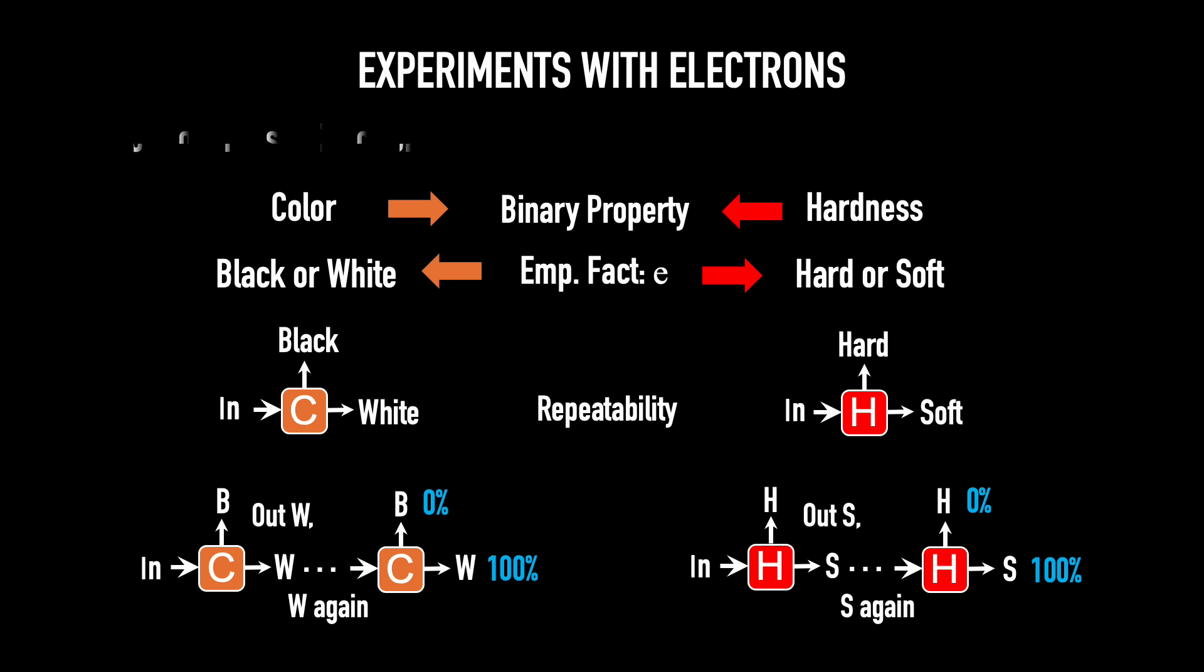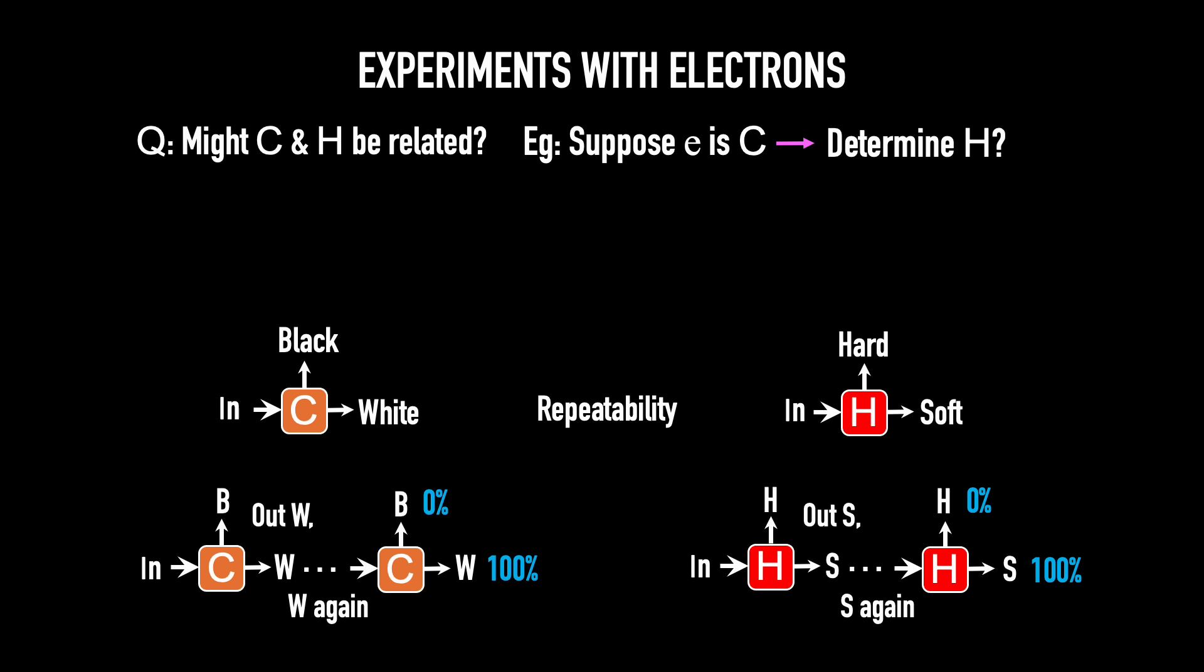So here's a natural question. Might the color and the hardness of an electron be related? And more precisely, might they be correlated? Might knowing the color infer something about the hardness? So the question is, suppose we know an electron is white. Does that determine its hardness? We can answer this with our boxes. Here's what I'll do. I'll take a random set of electrons and send them into a color box. About half come out white and about half come out black. Now I take those which come out the white aperture.